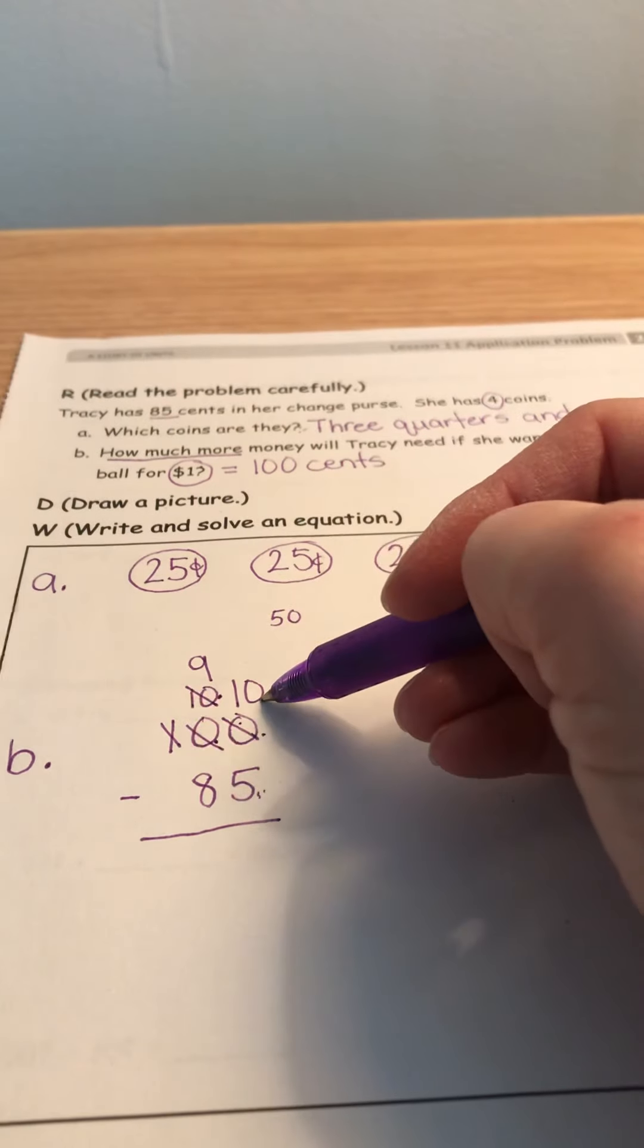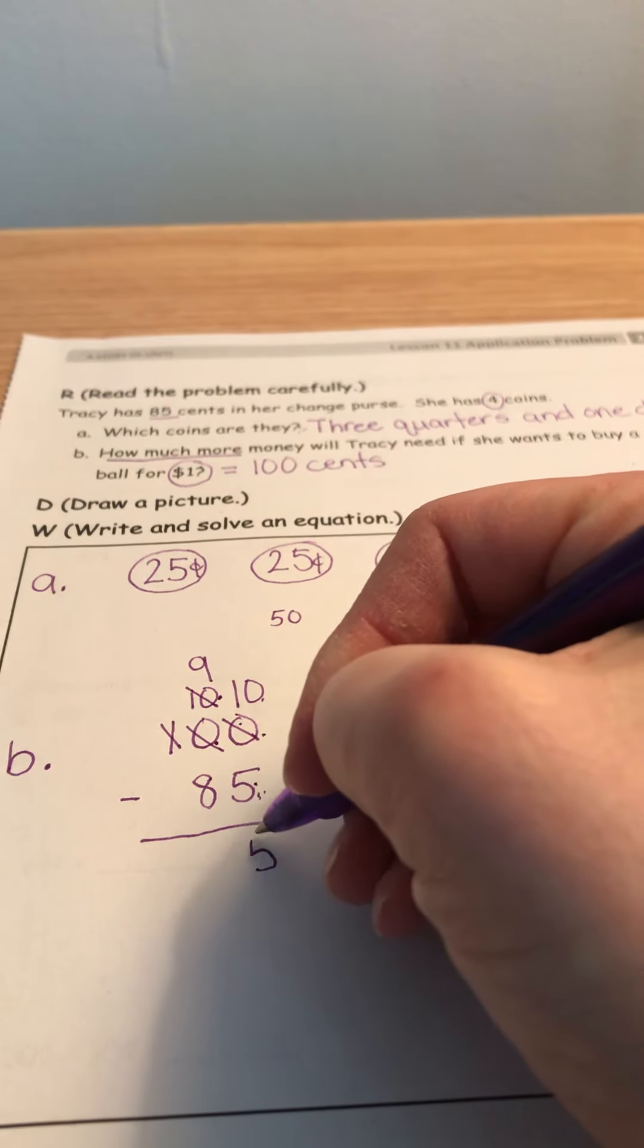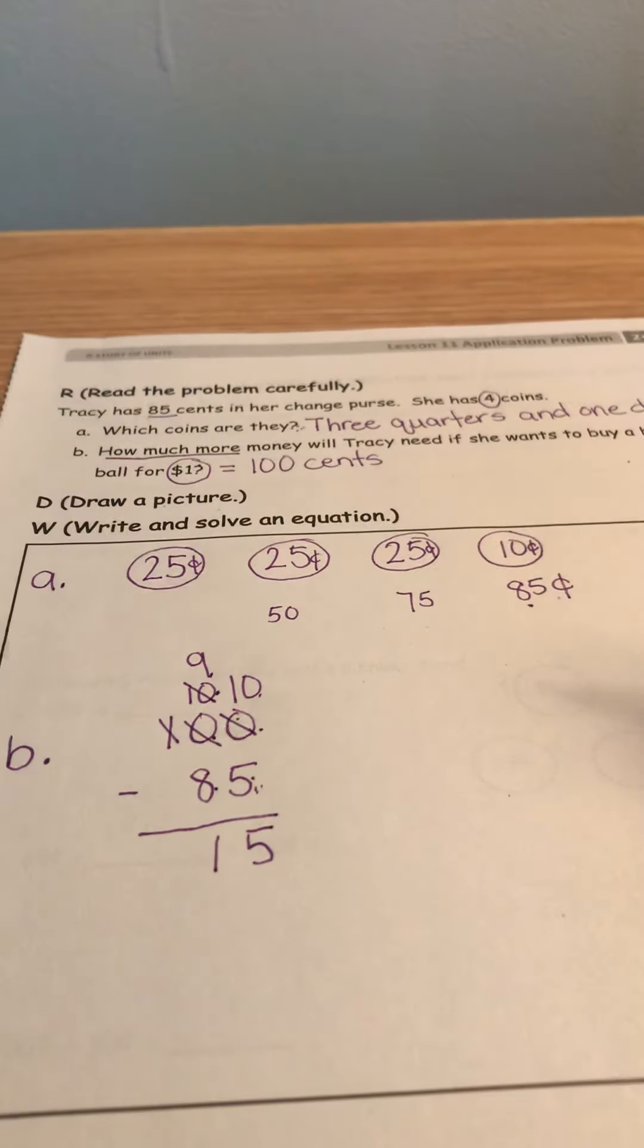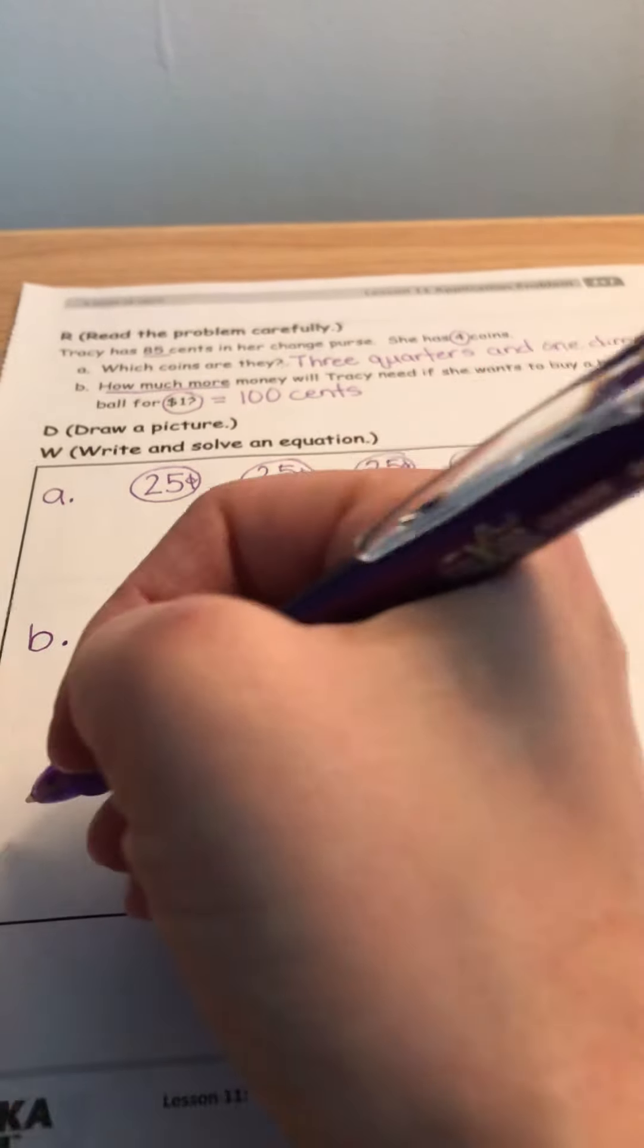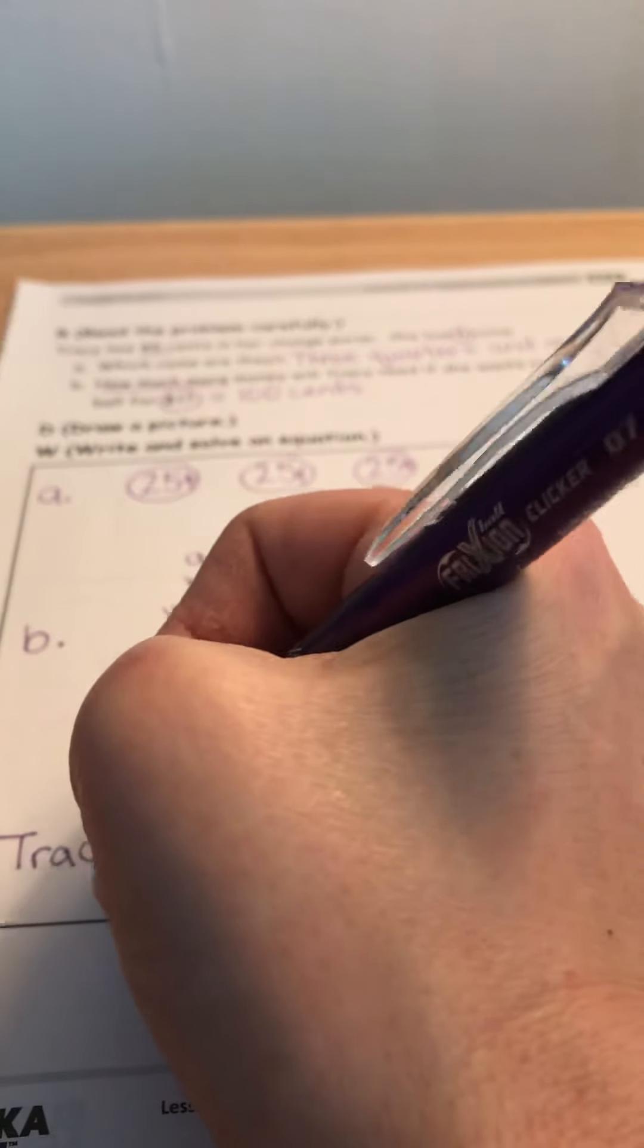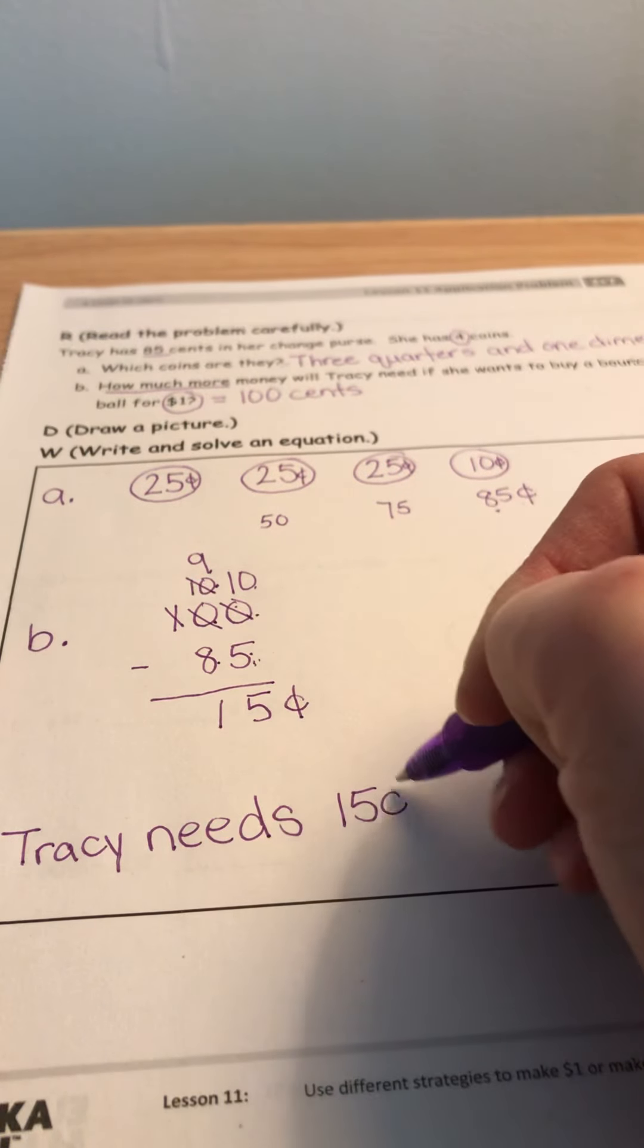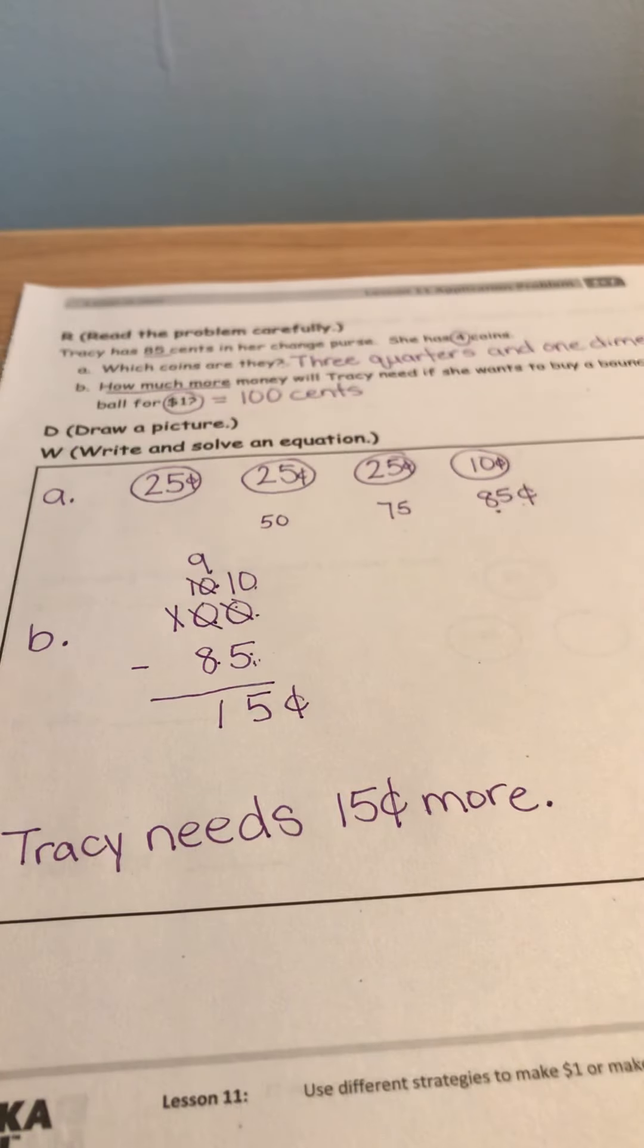So now I have 10 ones minus 5 ones equals 5 and 9 10s minus 8 10s equals 1 ten. That leaves me a total of 15 cents. So our answer statement will be Tracy needs 15 cents more. Great job, everybody.